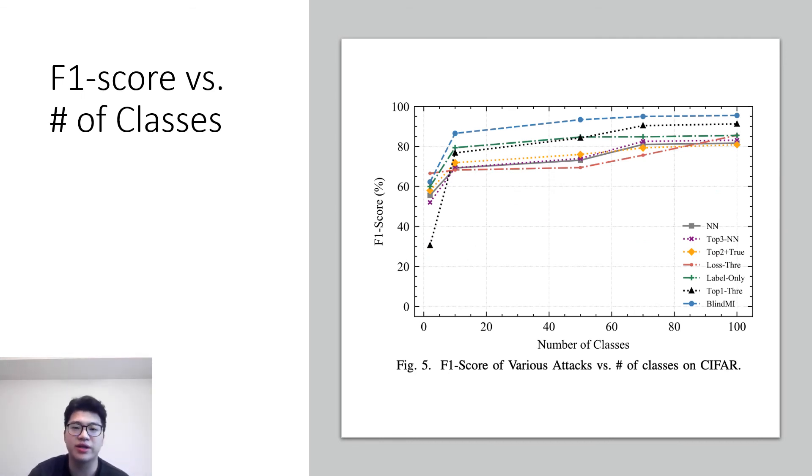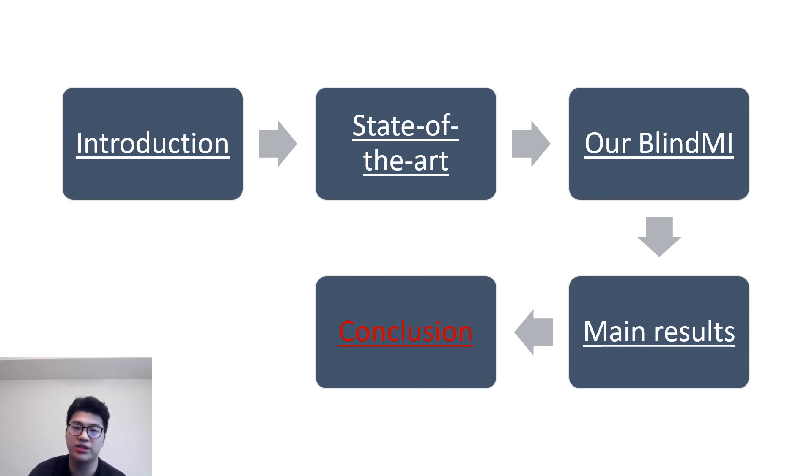In this part, we evaluate the F1 score of BlindMI and all other membership inference attacks when the number of classes increases in the target model. The performance of all membership inference attacks, including BlindMI, increases as the number of classes in the target model, and the performance boost is more significant when the number of classes is small. The reason is that when the dataset has more classes, the target model tends to generalize less, thus being more vulnerable to membership inference attacks. Besides, we can see that our BlindMI outperforms the others by up to 30%.